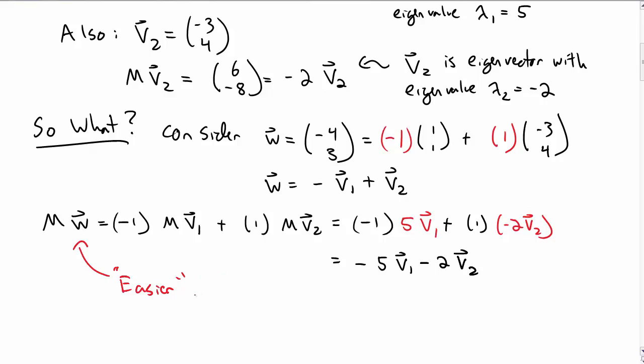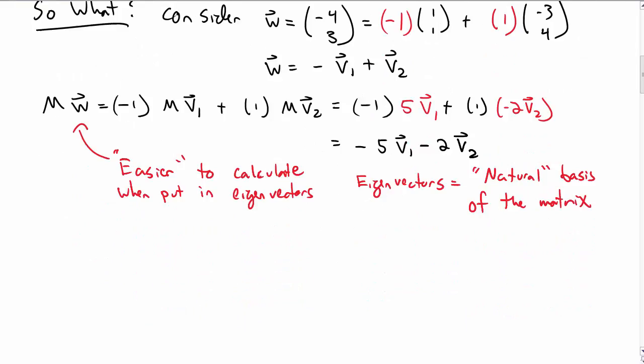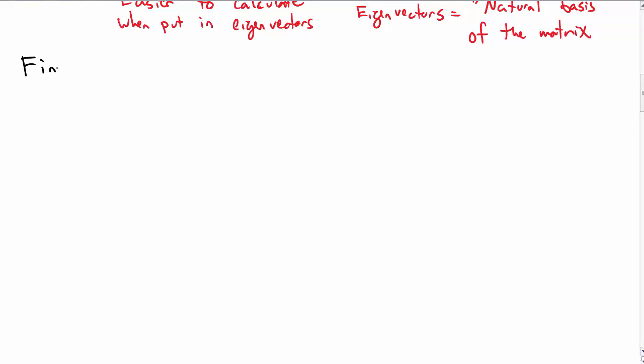So what? Well in some sense I'd say this is quote unquote easier to calculate the product M times W. Well okay maybe in this case it's not easier when we put it in terms of eigenvectors. Maybe a more convincing reason we'd want to do this is in some sense eigenvectors are a natural basis for the matrix. And so if we write out our vectors in terms of eigenvectors we're kind of seeing a natural basis for that vector.